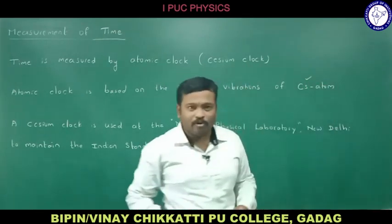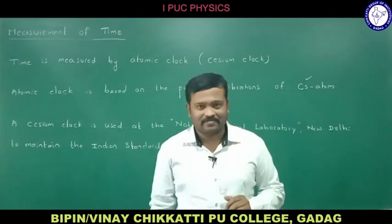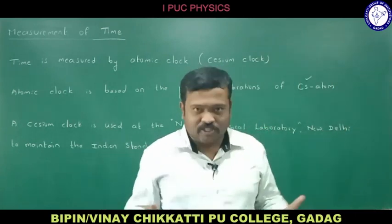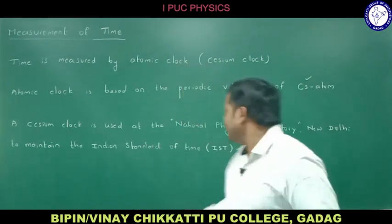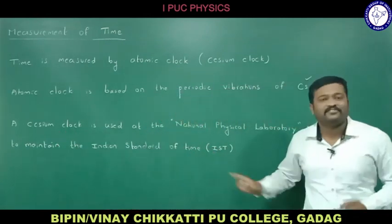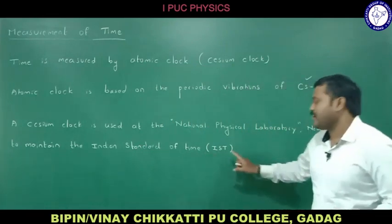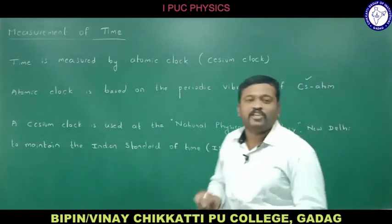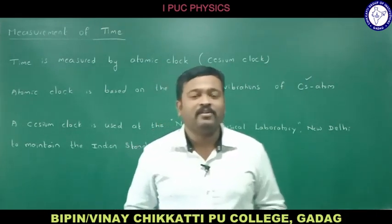The atomic clock is based on the periodic vibrations of a cesium atom. Cesium is used because it has stable vibrations. The cesium clock kept at the National Physical Laboratory, New Delhi, maintains Indian Standard Time (IST). Whenever the time is given as 10 o'clock IST, it is that cesium clock which is maintaining that standard, and all other clocks are set according to it.